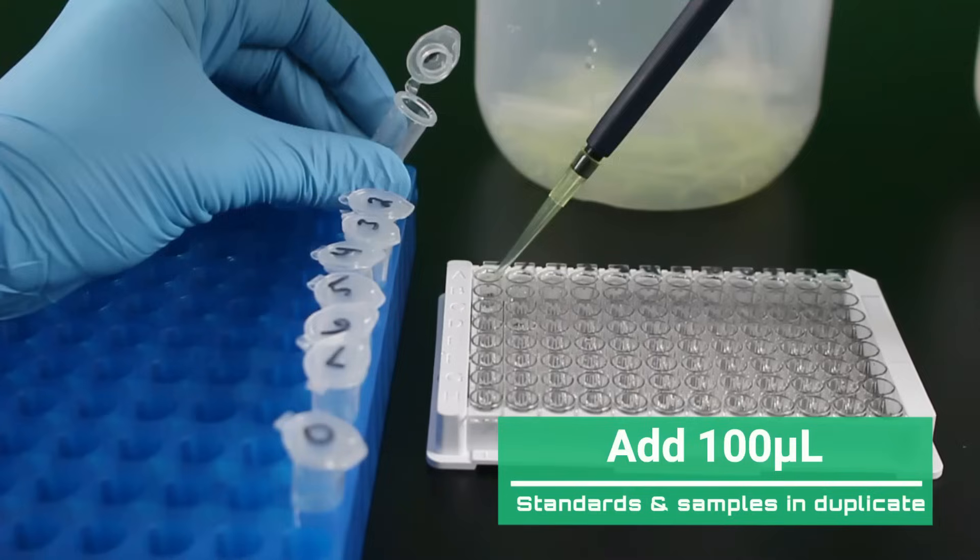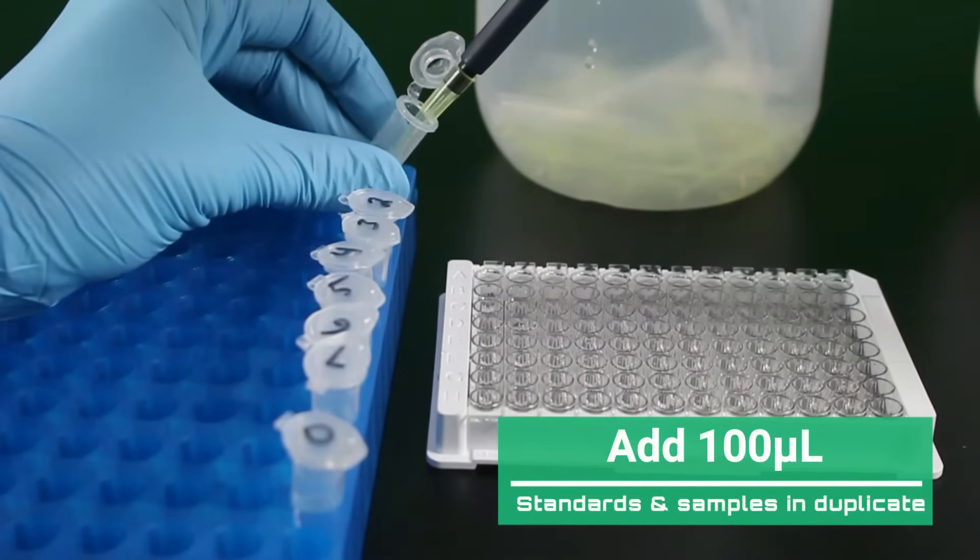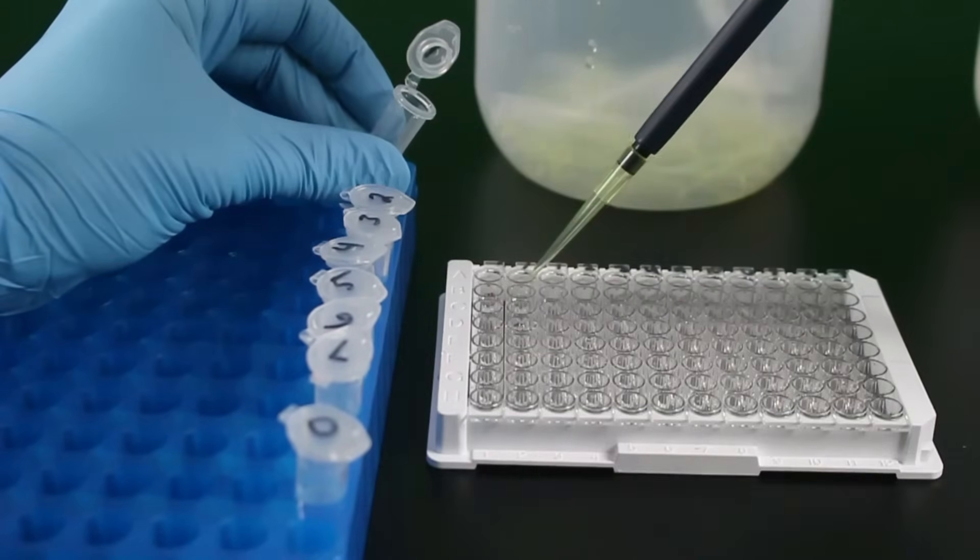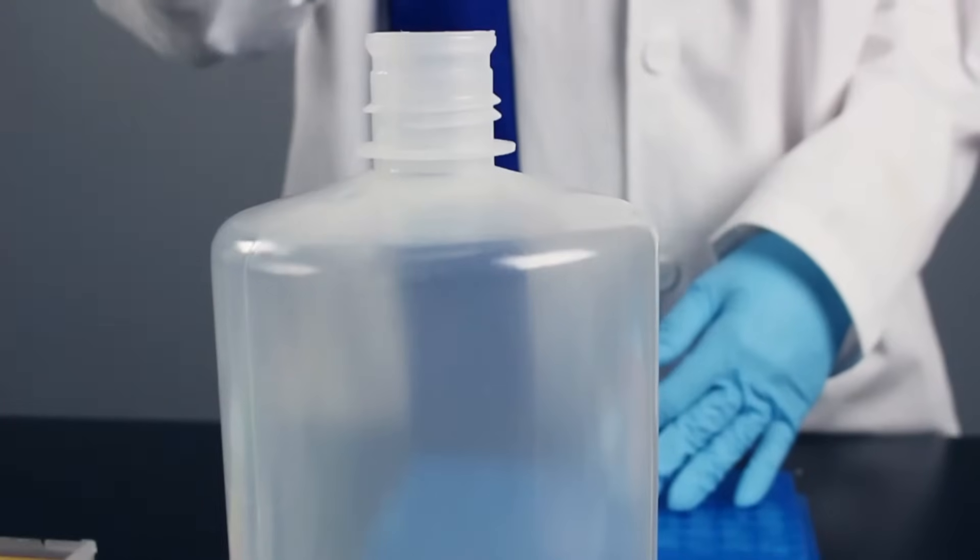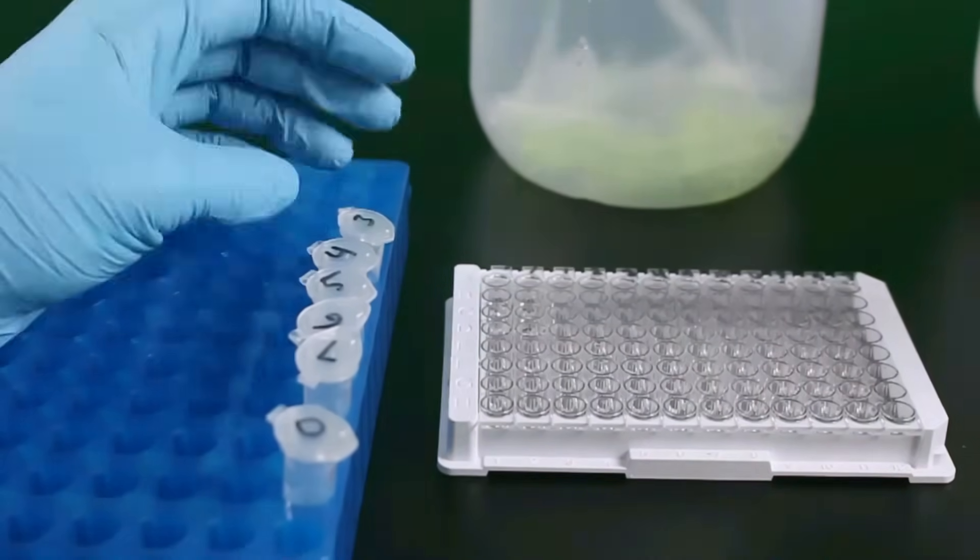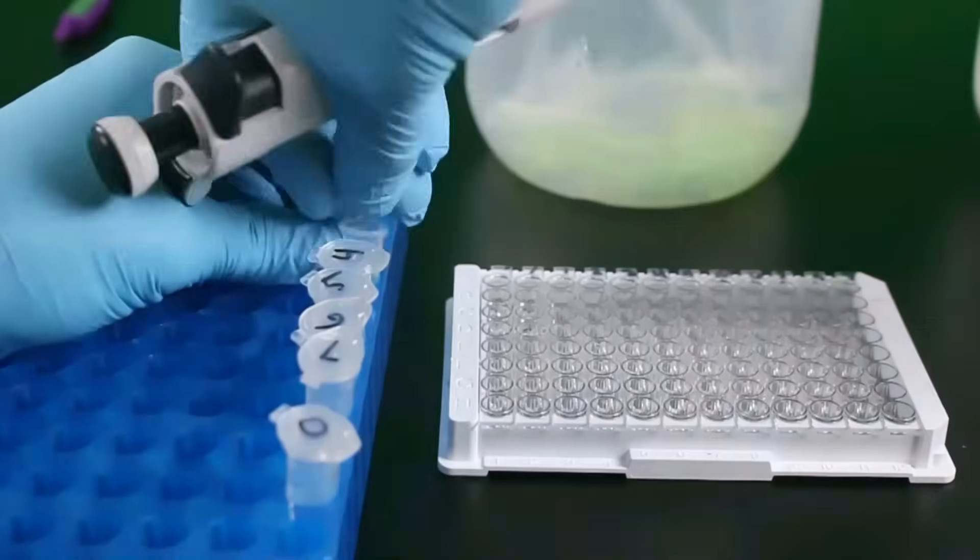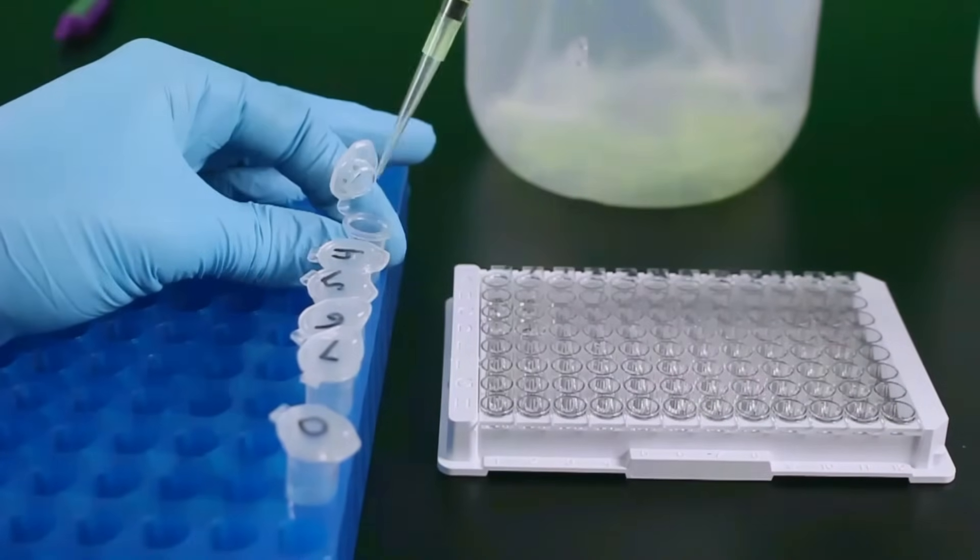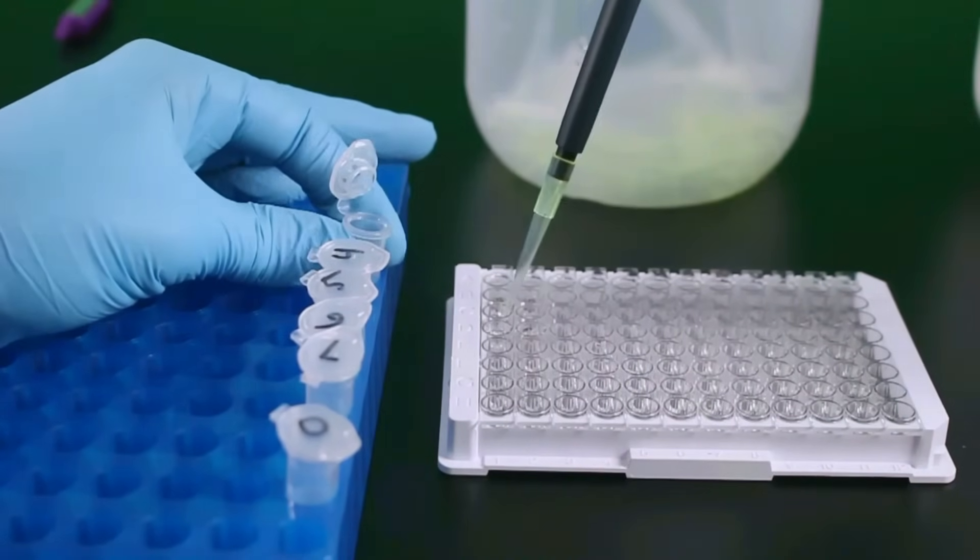Add 100 microliters of standard and sample in duplicate to each well according to a plate map. Get a new pipette tip between each standard. Once you've added your standard, you can add your diluted samples. Keep track of the plate map for every run. Ensure there are no bubbles as the capture antibody should be able to interact with the homogeneous mixture.